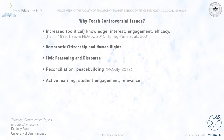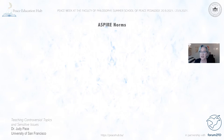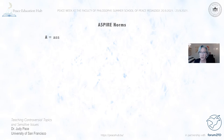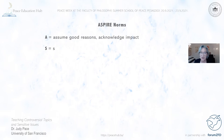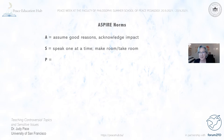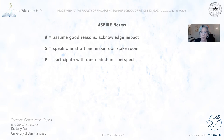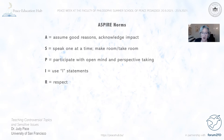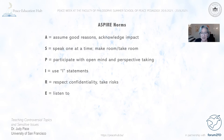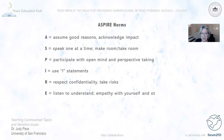Doing this work requires risk-taking. If we want to be able to take risks with one another, we need to set some norms for discussion. I borrowed these norms from a colleague — the acronym is ASPIRE. A stands for assuming good reasons for what we say, but also acknowledging the impact our words have on others. S is for speaking one at a time: make room, take room, step up, step back so everybody gets a chance to speak. P is for participating with an open mind and taking different perspectives. I is for using I-statements. R is for respecting confidentiality, taking risks, and obviously respect. E stands for escuchar — the Spanish word for listen — listening to understand and having empathy with yourself and others.